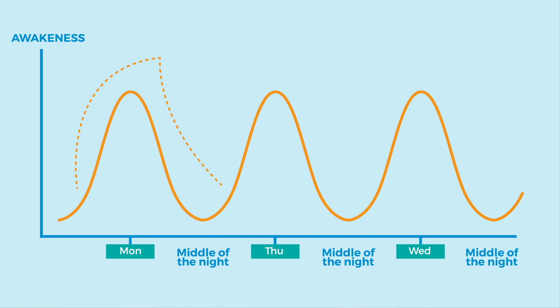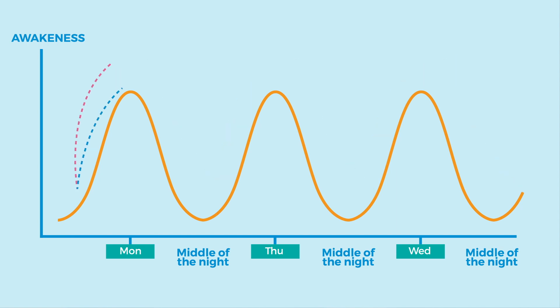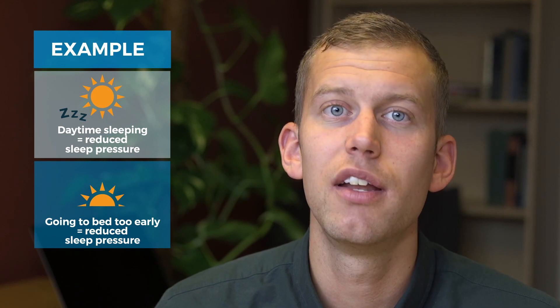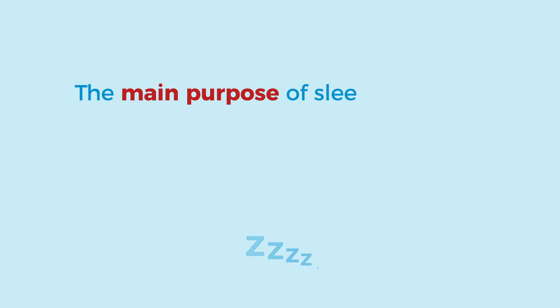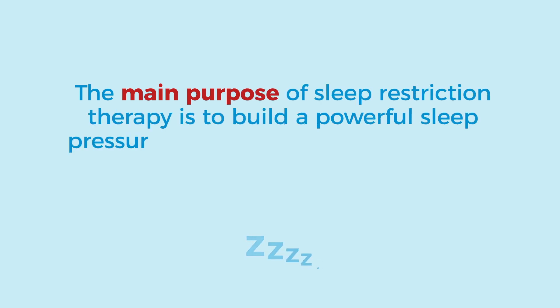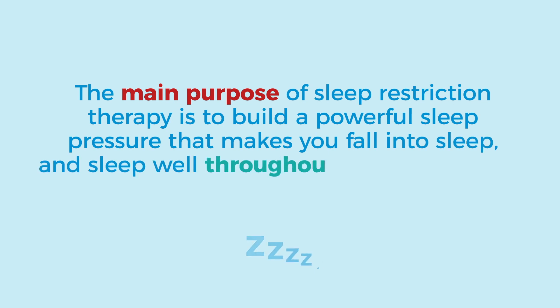As you sleep, your sleep pressure decreases, and the same happens throughout the rest of the week. In people with insomnia, these two processes are unsynchronized — the person does not have a high sleep pressure when the daily rhythm is set to sleep, or vice versa. For example, daytime sleeping reduces sleep pressure, meaning less pressure when the circadian rhythm is set to sleep at bedtime. The same happens if you go to bed too early before you're sleepy. The main purpose of sleep restriction therapy is to build a powerful sleep pressure that makes you fall asleep and sleep well throughout the entire night.